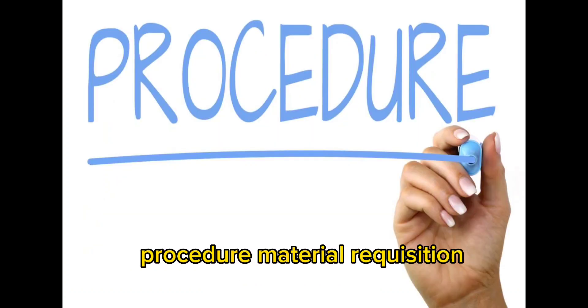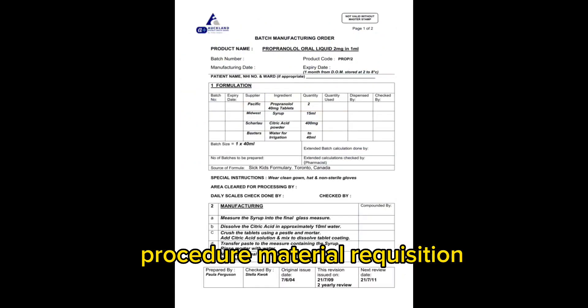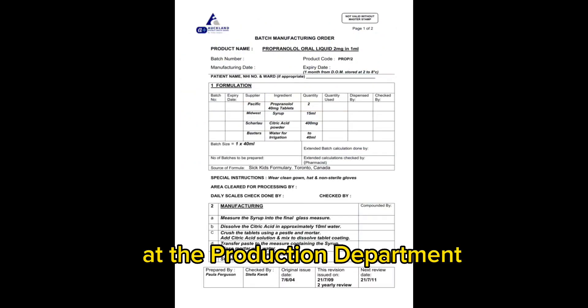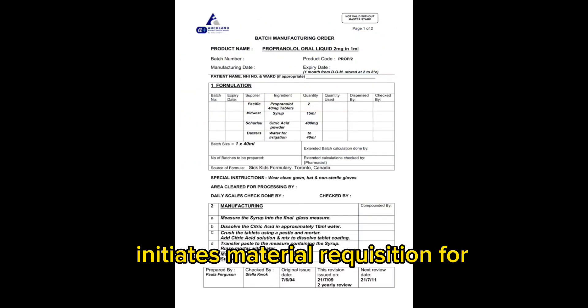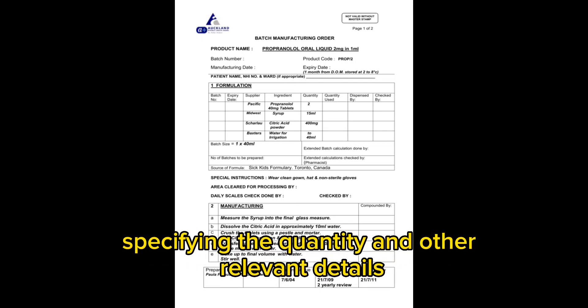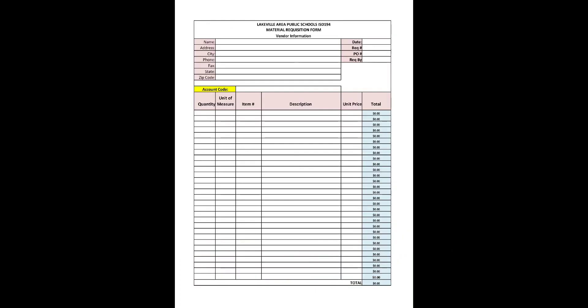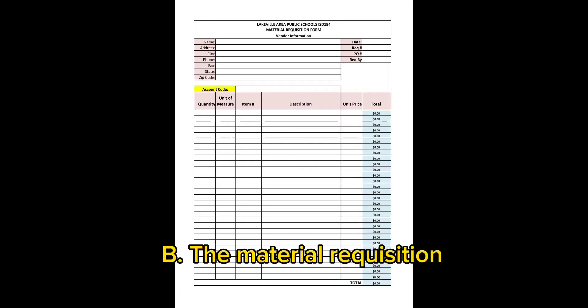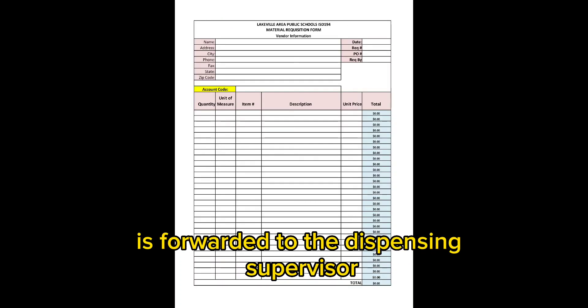Material requisition: The production department initiates a material requisition for the required raw materials, specifying the quantity and other relevant details. The material requisition is then forwarded to the dispensing supervisor.